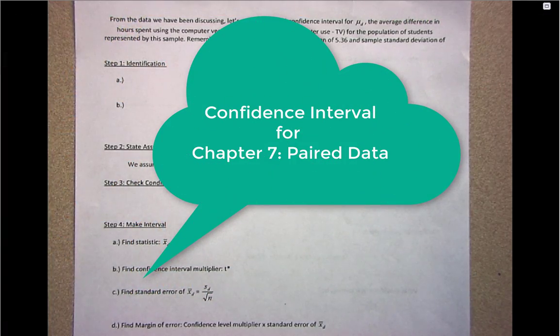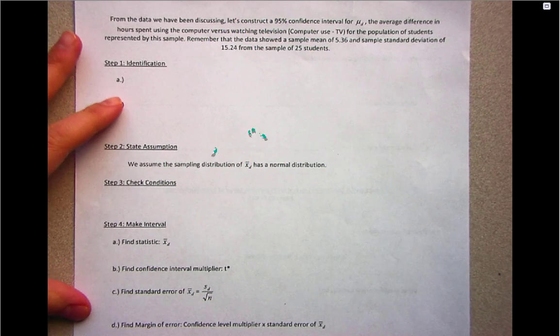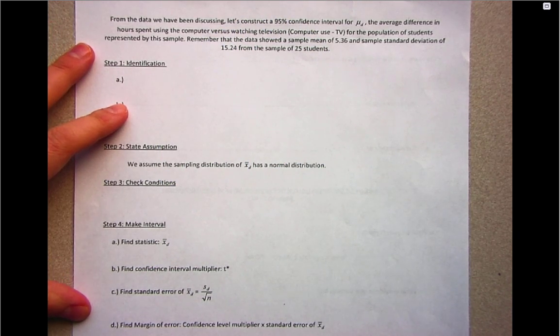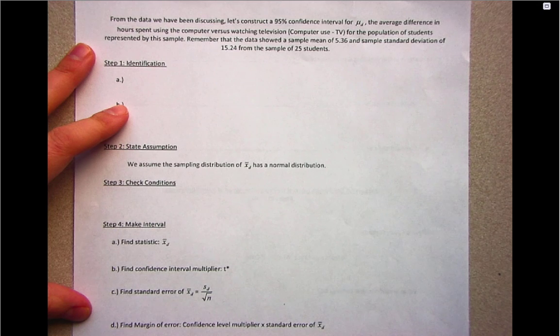Today we're going to look at our first example for calculating a confidence interval for paired data. Remember, for paired data you have a pair of measurements on one group. Here our measurements are computer and TV time for individual students.